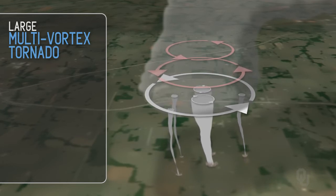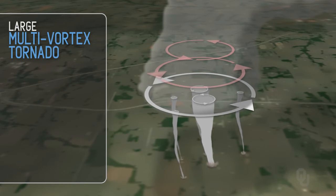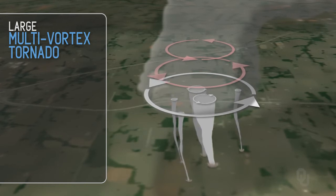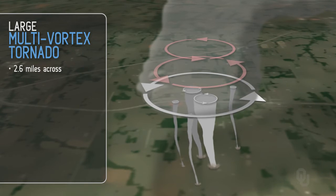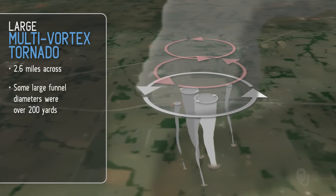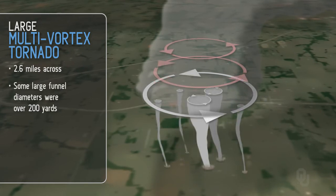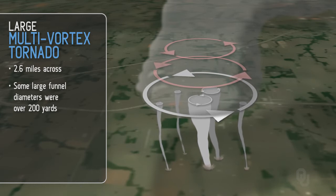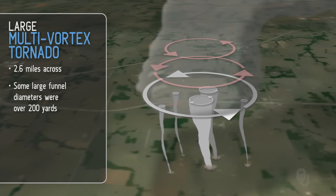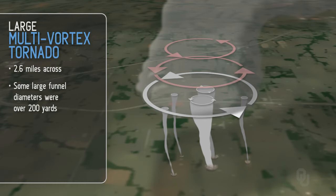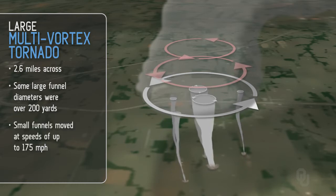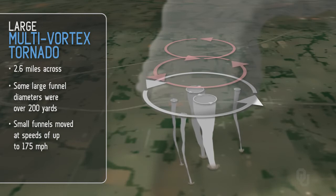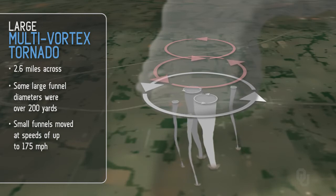You see two large tornadoes. You see smaller tornadoes rotating around. The entire thing is a tornado — it's 2.6 miles across. You have the big funnels in the middle. Some of those were as large as two football fields end to end, and there were many of them. The smaller ones rotating around in the storm will move towards you — these did — at 175 miles an hour.